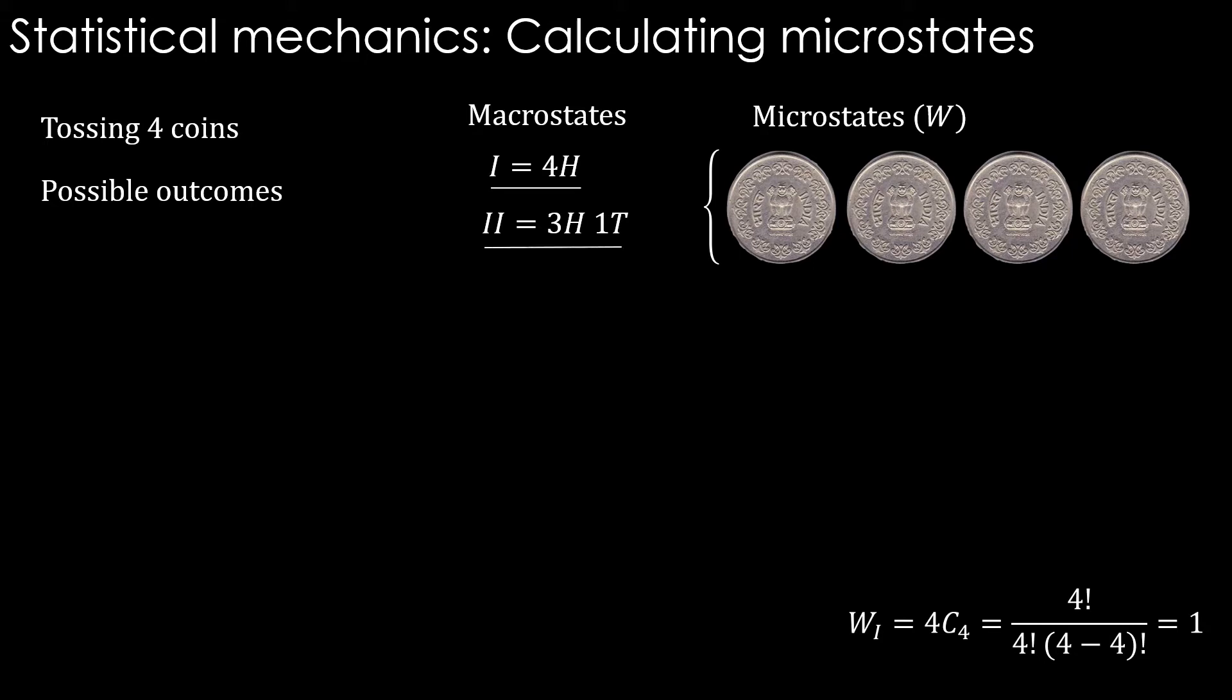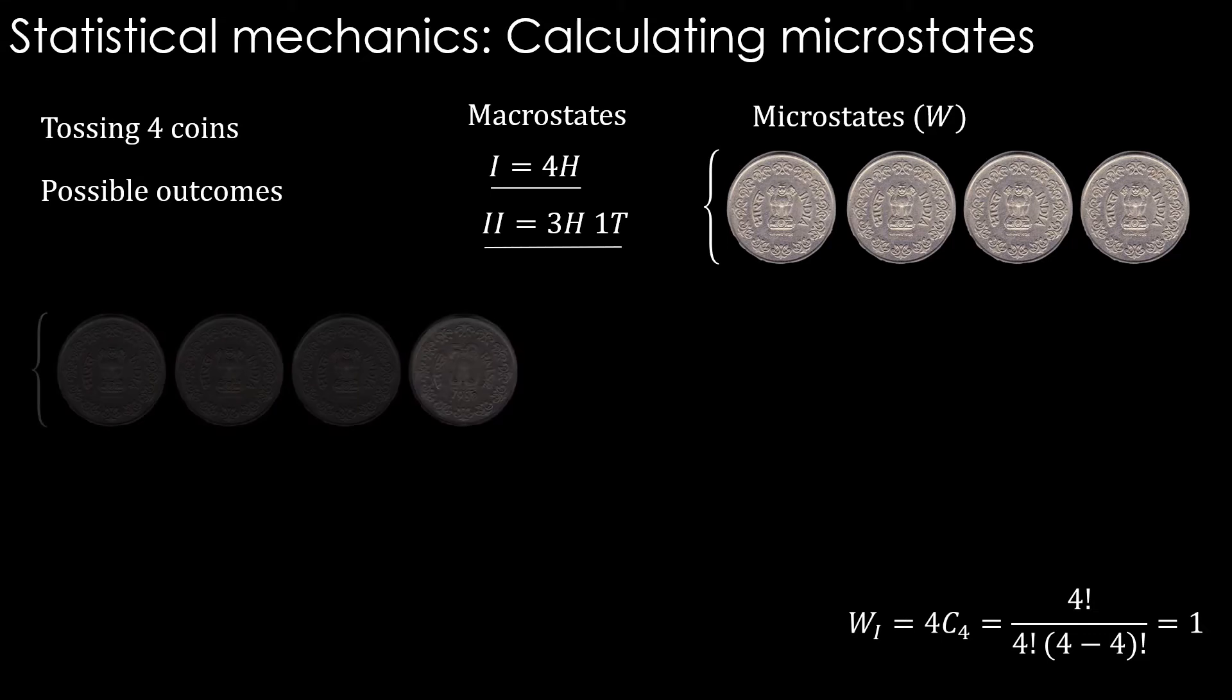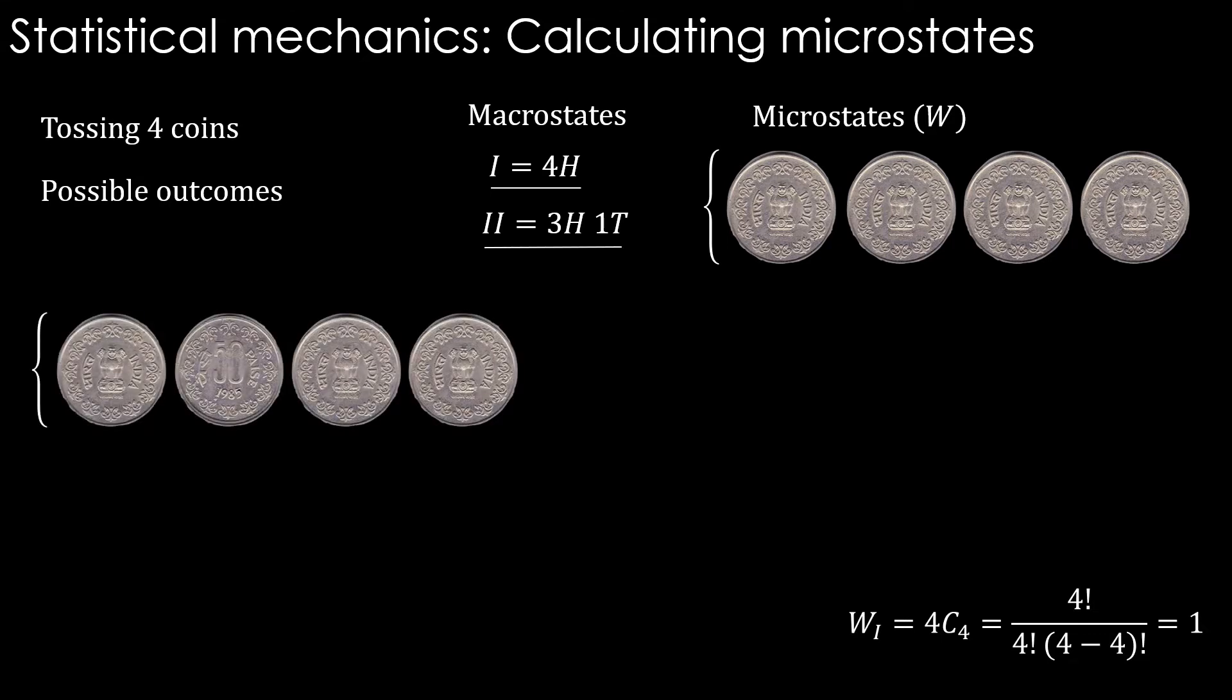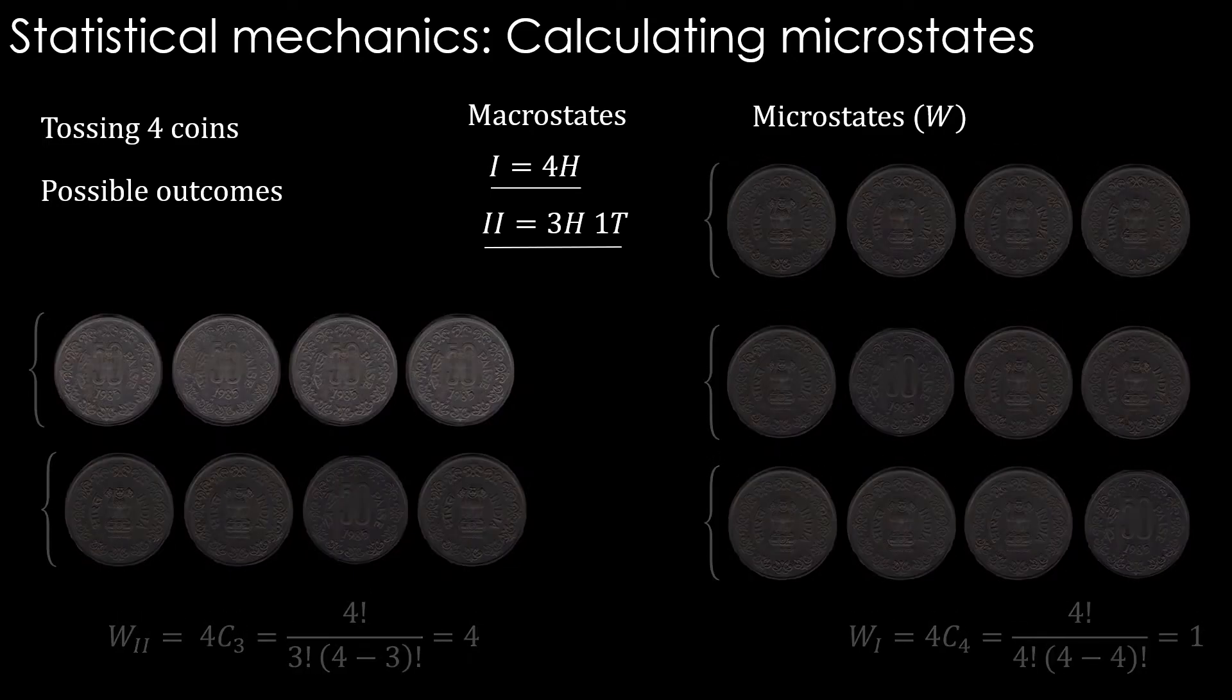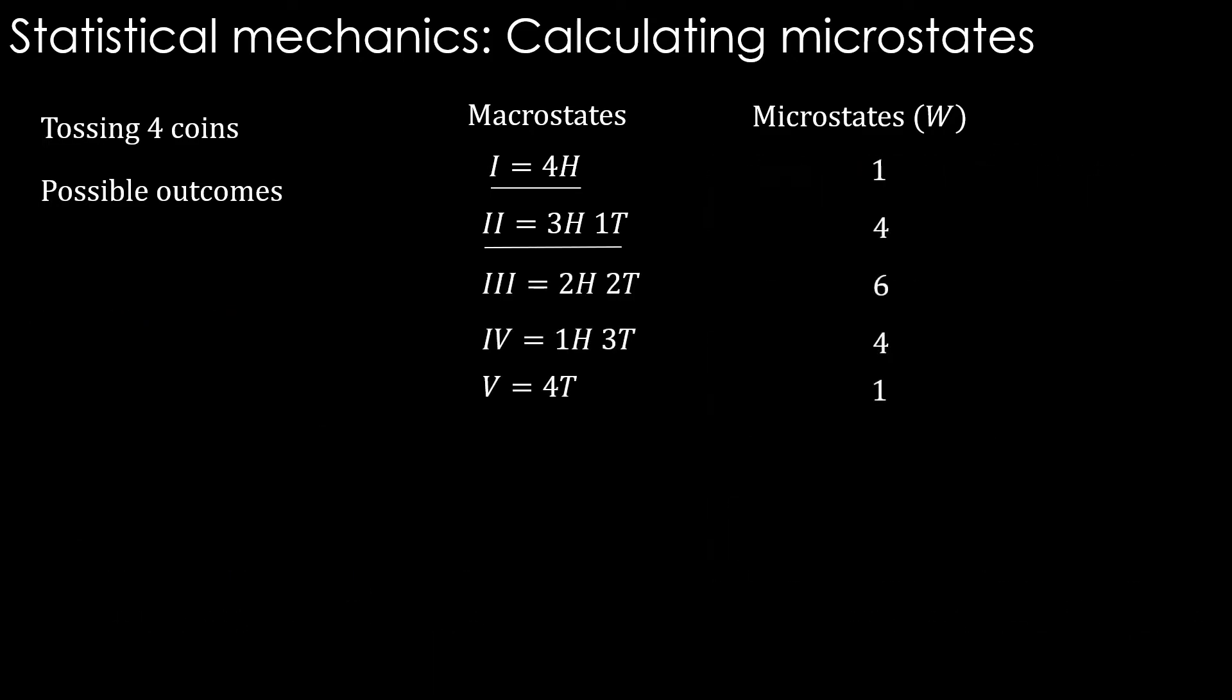In the 3 heads case, we have 1 tails in the 4th or 3rd or 2nd or 1st coin. So there are 4 ways in which we can get that. Let's see all these 4 microstates together. 4C3 gives us the number of microstates to be 4. If we do it for other macrostates, the corresponding number of microstates would be these.